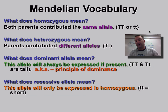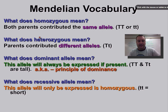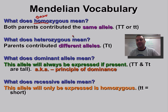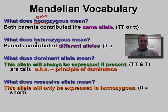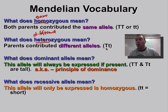Homozygous and heterozygous are two very important terms. The '-zygous' part refers to the alleles — the genes that you have. Homozygous simply means the same: both parents contribute the same allele. So a homozygous individual got a tall allele from mom and a tall allele from dad, or a short allele from both parents. Heterozygous — remember, hetero means different — means the parents contributed different alleles: one parent gave the tall allele, the other gave the short allele.